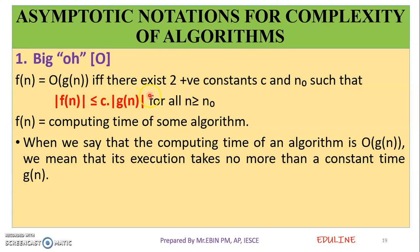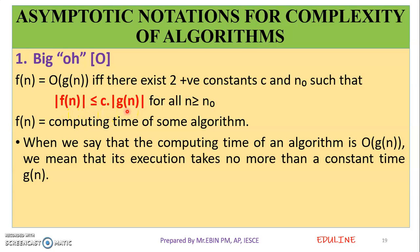such that f of n is less than or equal to c into g of n, for all n greater than or equal to n0. So this is the condition for Big O notation: f of n less than or equal to c into g of n.